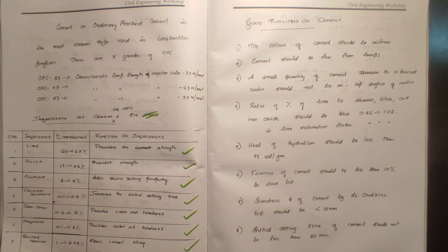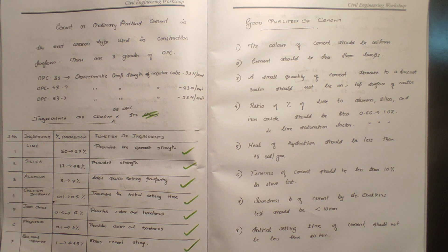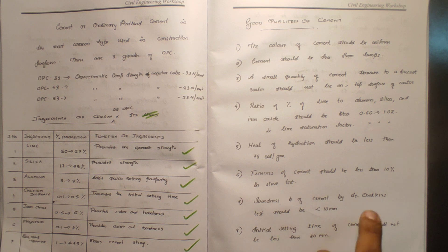For the fineness test, take 100 grams of cement and sieve it through a 90-micron sieve. The residue retained on the 90-micron sieve should not exceed 10 grams out of every 100 grams of cement tested.